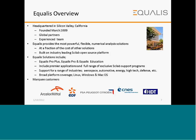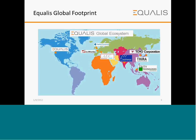Equalist is headquartered in Silicon Valley, California, founded in March 2009. Equalist has expanded with partners globally and has built an experienced team. Equalist provides the most powerful, flexible numerical analysis solutions at a fraction of the cost of other solutions. Solutions are built on the industry-leading SciLab open-source platform. Equalist solutions include Equalist Pro Plus, Equalist Pro, and Equalist Education, supporting industries such as aerospace, automotive, energy, defense, and others, with broad platform coverage and a range of valued customers.